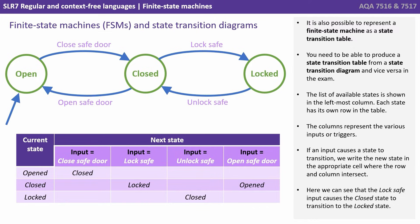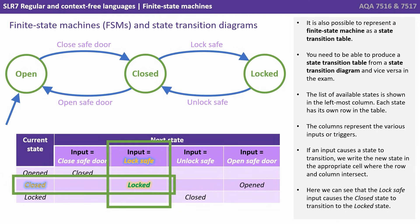It's also possible to represent a finite state machine as what we call a state transition table. You need to be able to produce a state transition table from a state transition diagram and vice versa in the exam. The list of available states is shown in the leftmost column and each state has its own row in the table. The columns represent the various inputs or triggers. If an input causes a state to transition, we write the new state in the appropriate cell where the row and column intersect. Here we can see that the lock safe input causes the closed state to transition to the locked state.